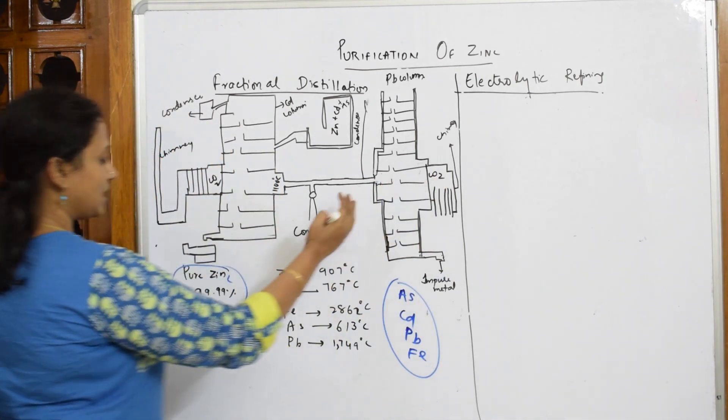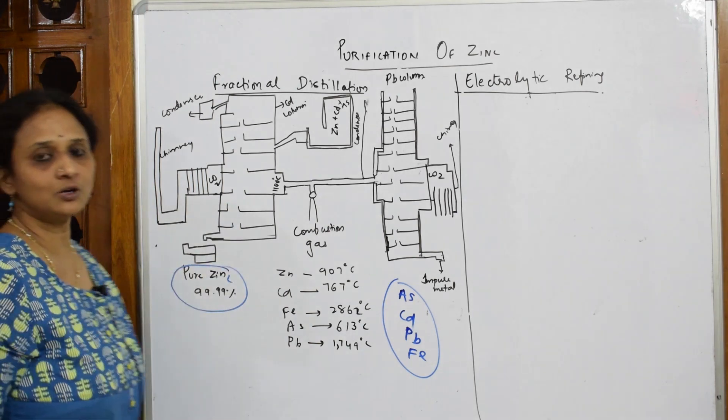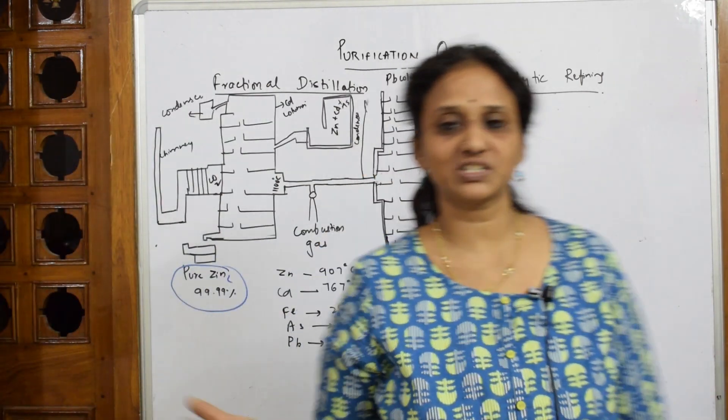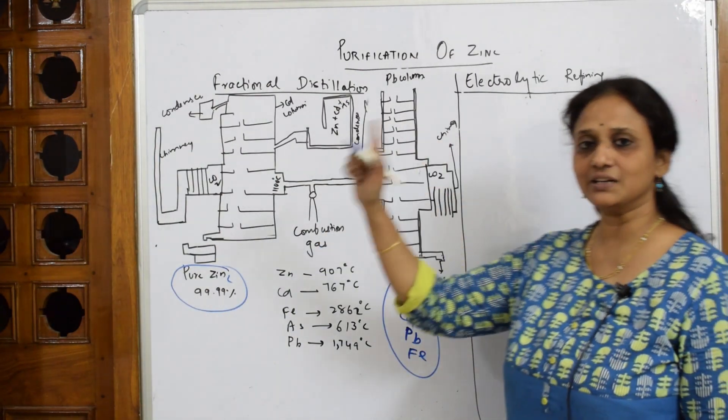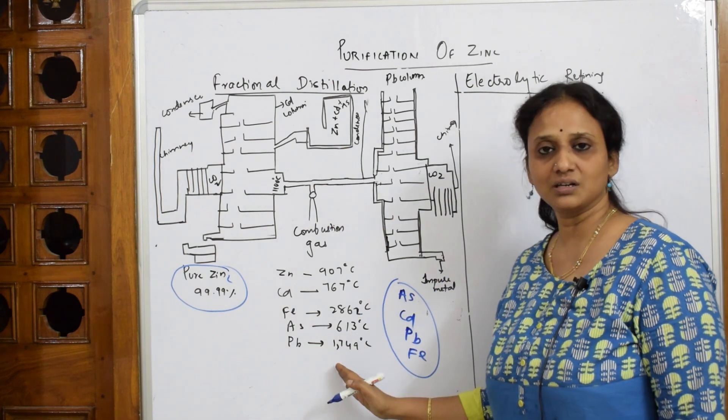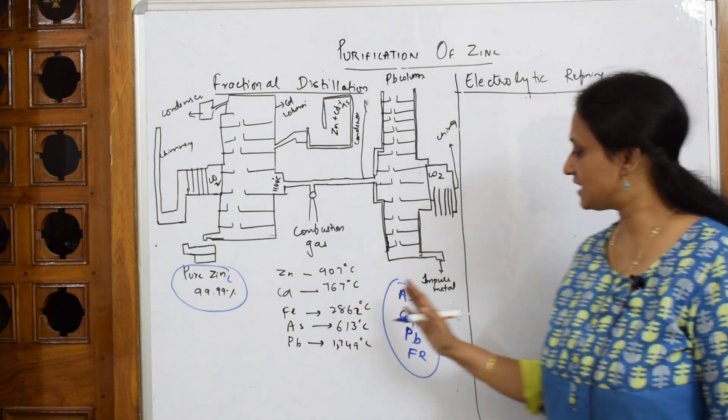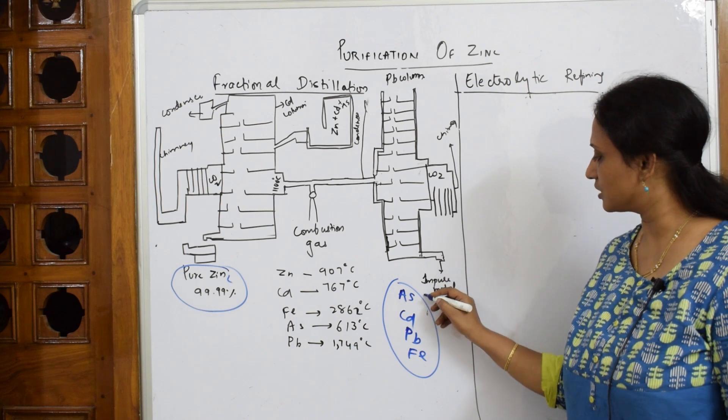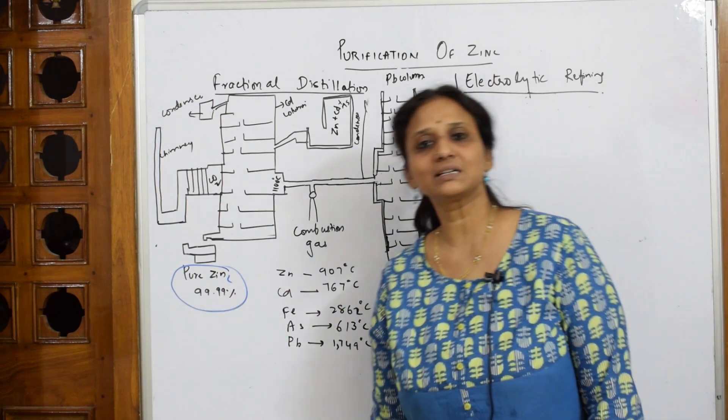This is the purification technique. First, write the definition, try to remember these boiling points, and see at what temperature each metal is coming out. Those are your impure metals, and your pure metal zinc is separated.